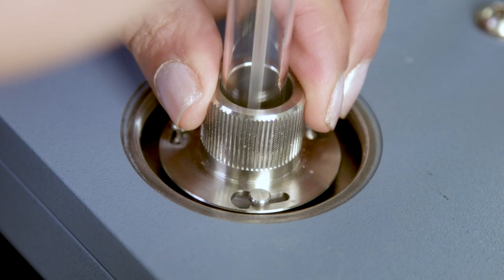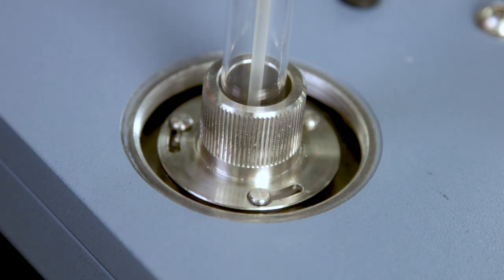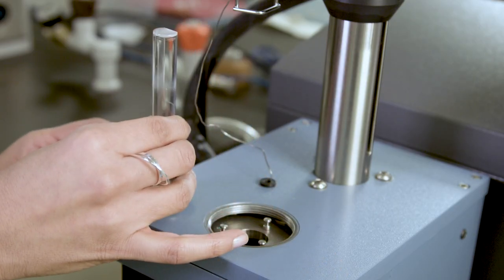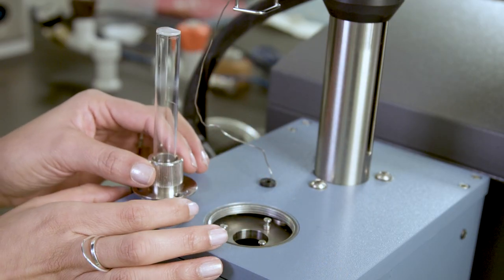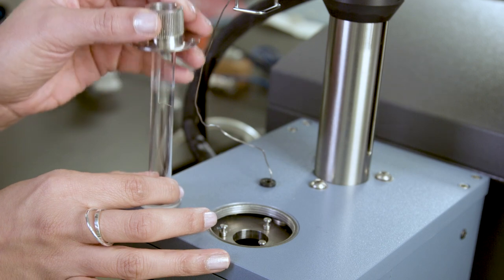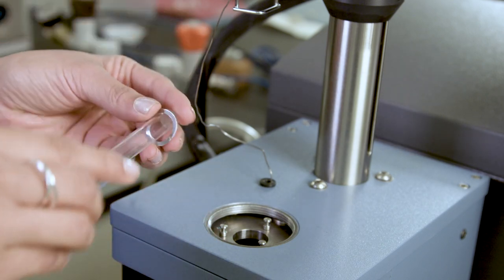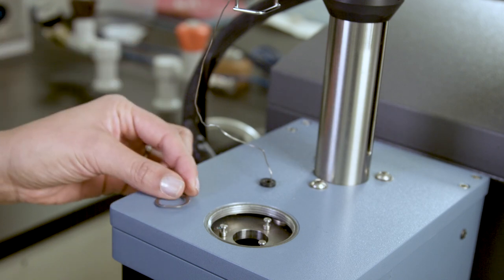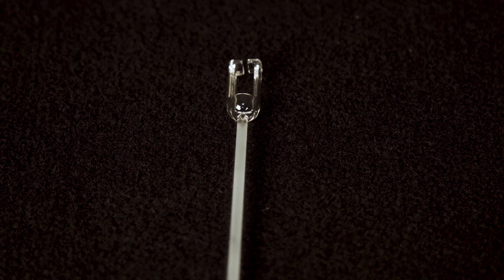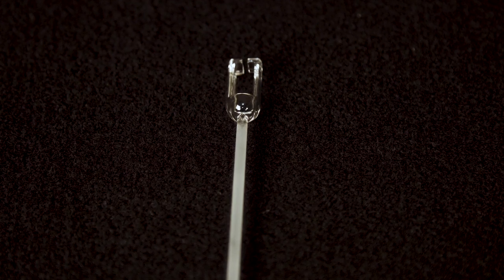Twist the stage retainer ring counterclockwise. Pull it up off the three posts and slide it up off the stage. Take the wave washer up off the stage flange and remove it.